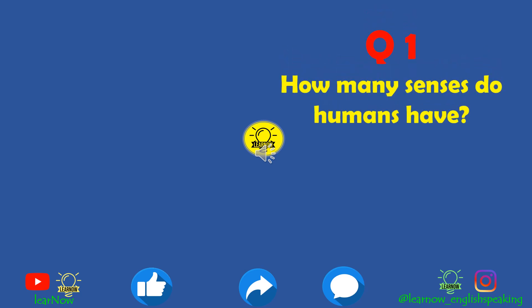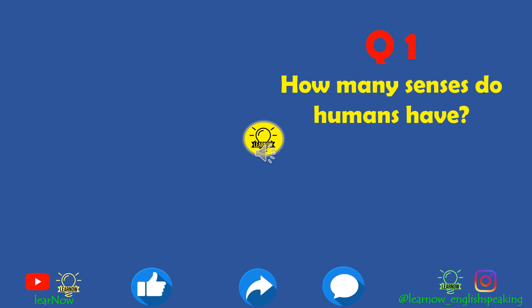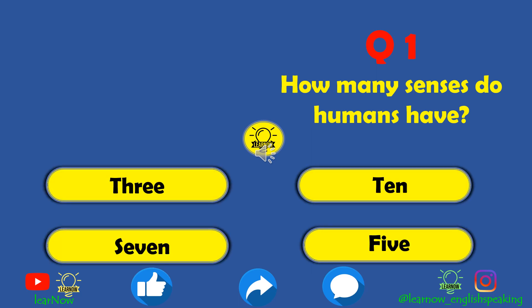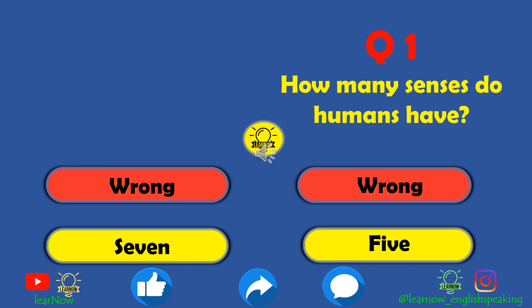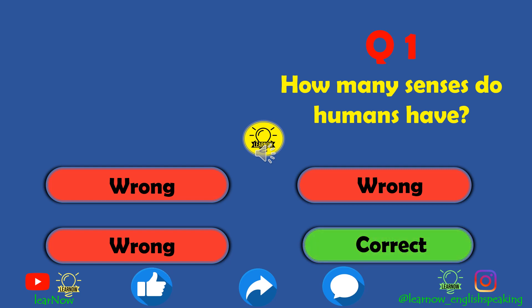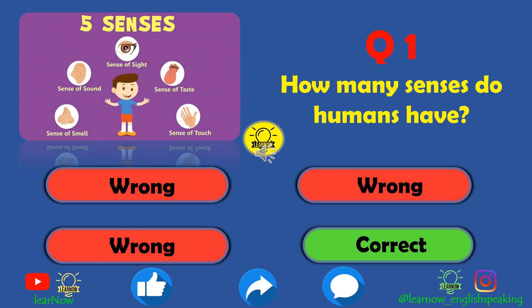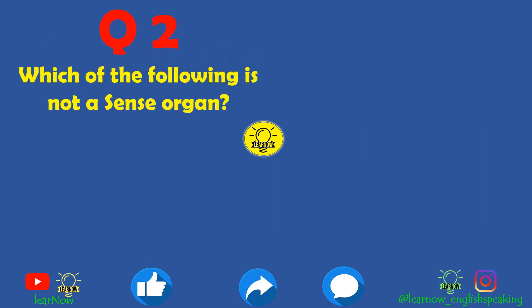The first question is: how many senses do humans have? The options are 3, 10, 7, or 5. The correct answer is 5. In the chapter 'Super Senses' we talked about the 5 senses of human beings: sense of sight, sense of taste, sense of sound, sense of smell, and sense of touch.